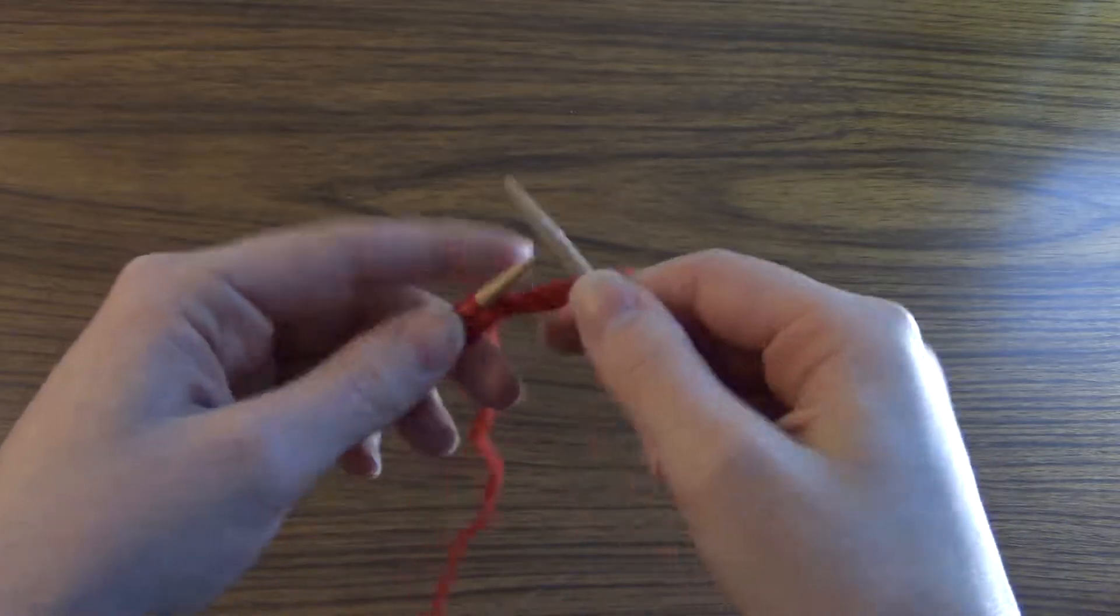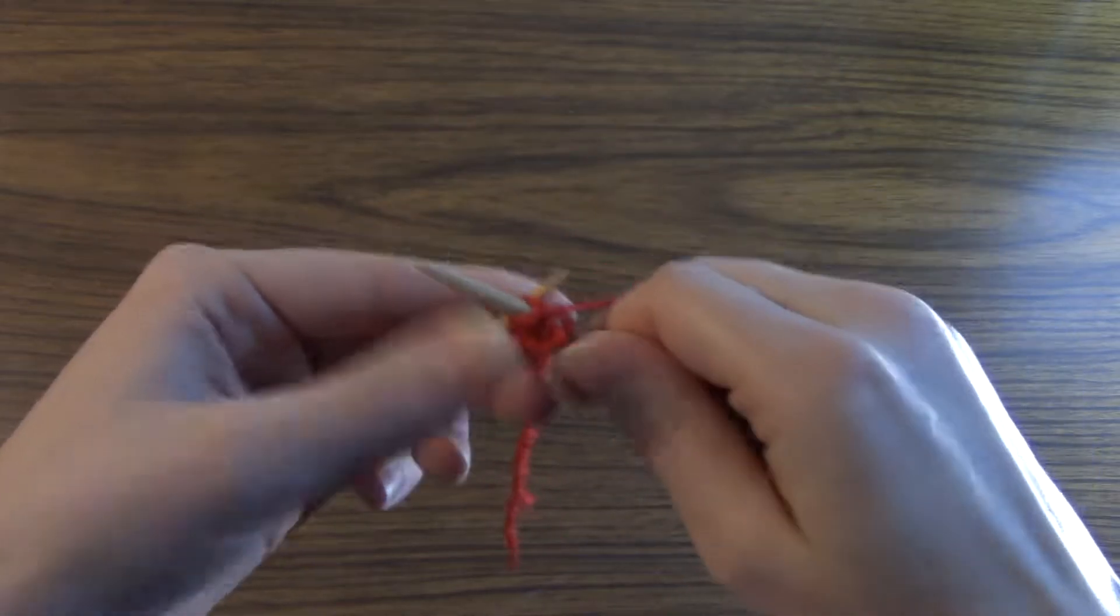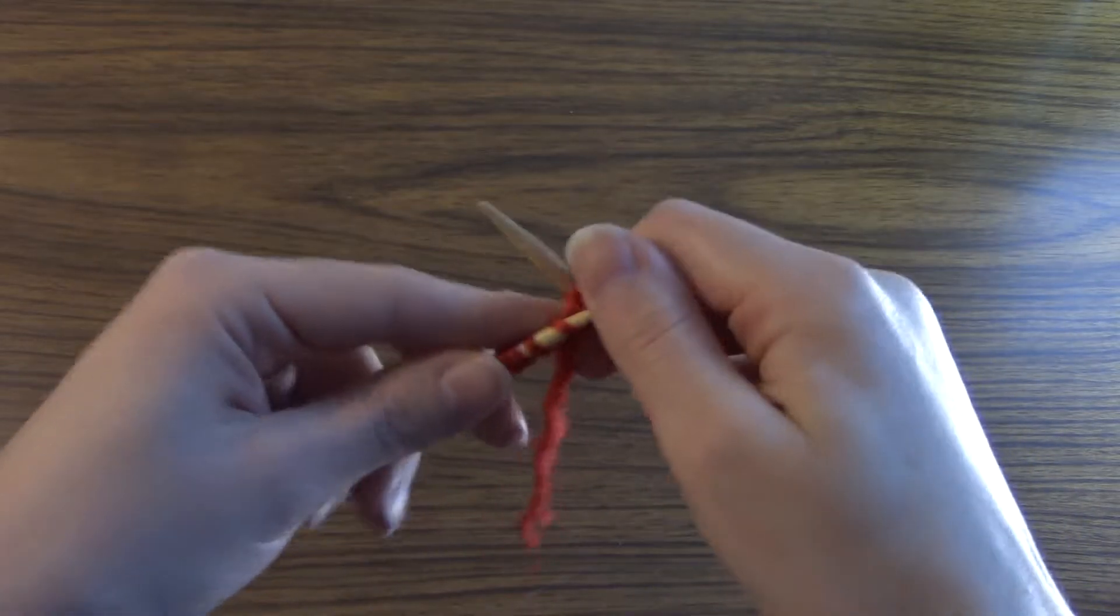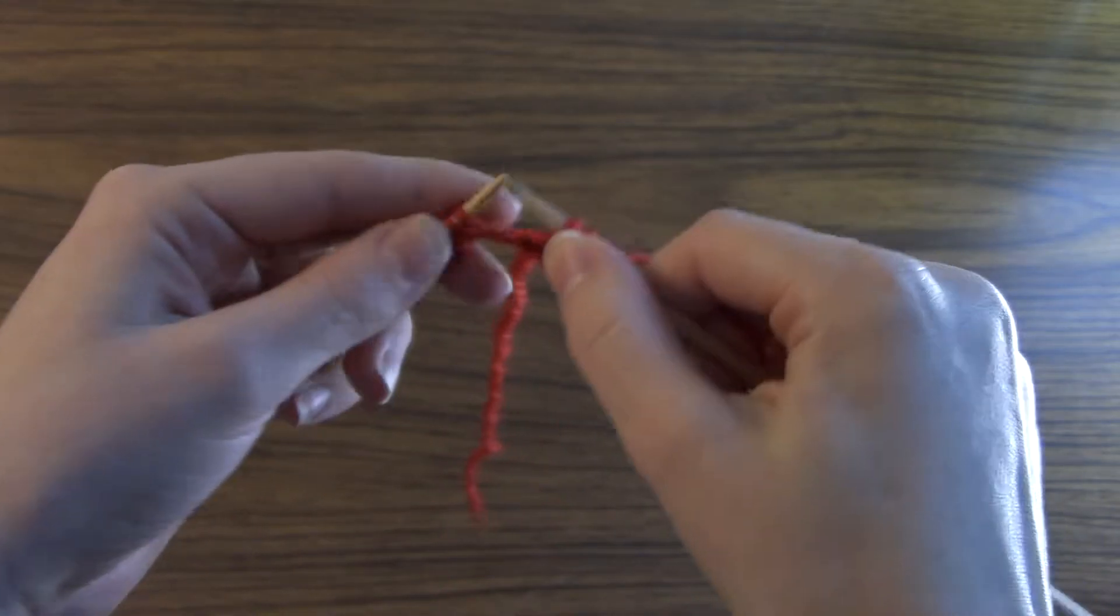and slide the old stitch off. So again, through the front, wrap counter clockwise, push it through, and slide the old stitch off. And you want to do that for however many stitches you need to purl.